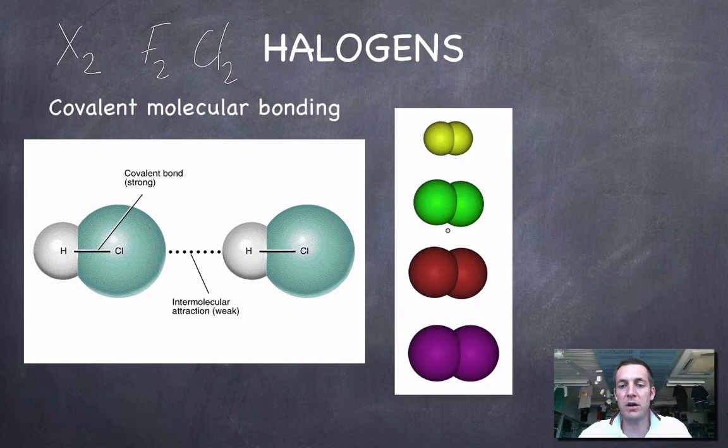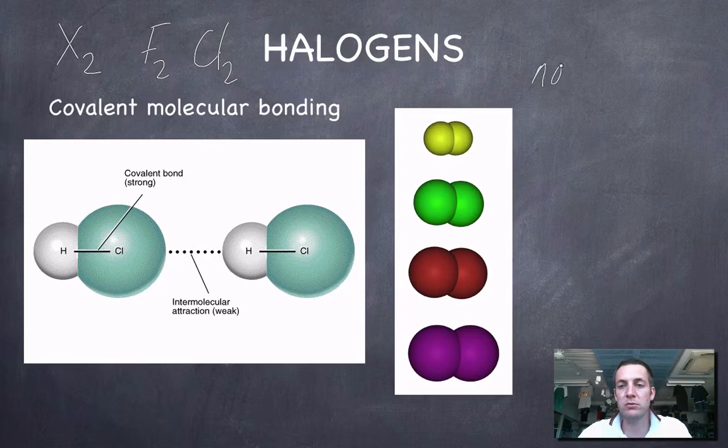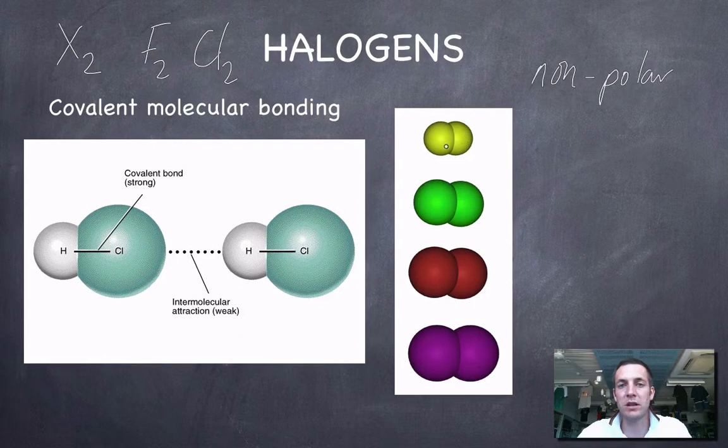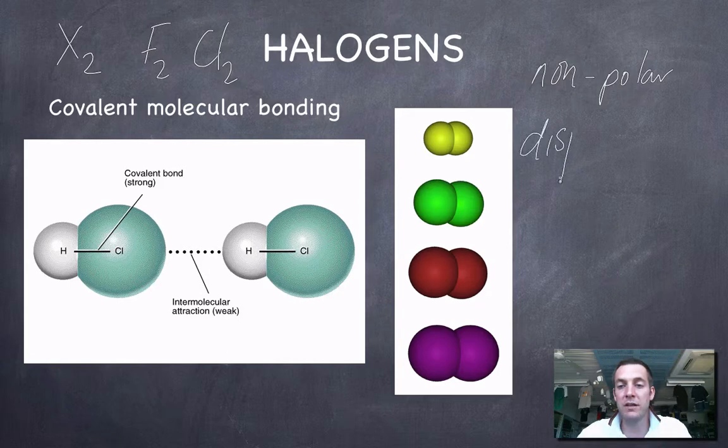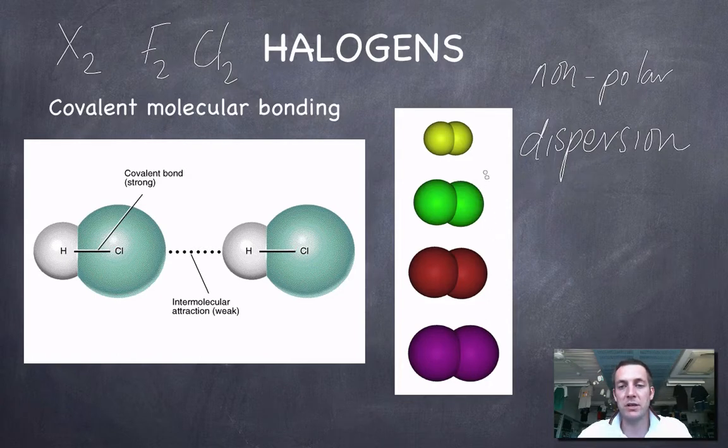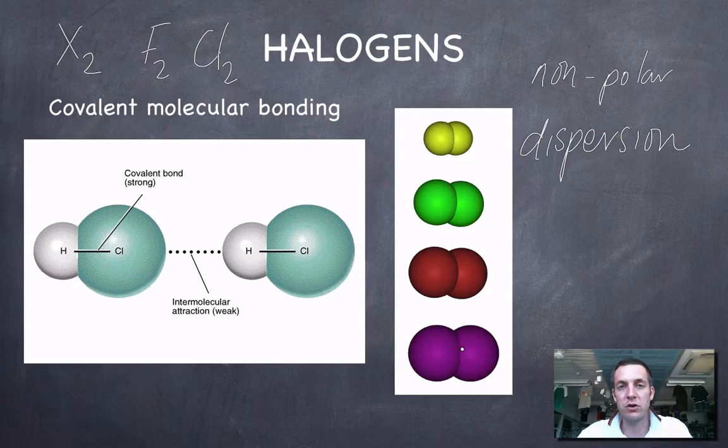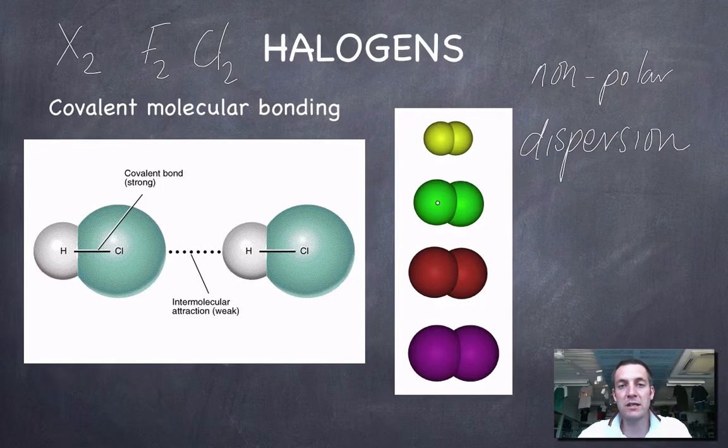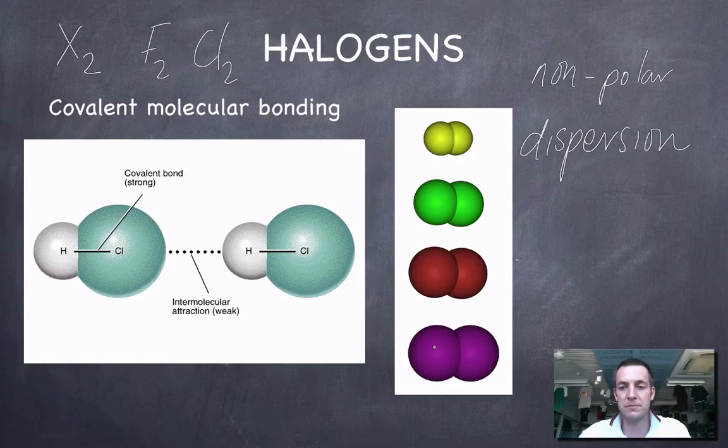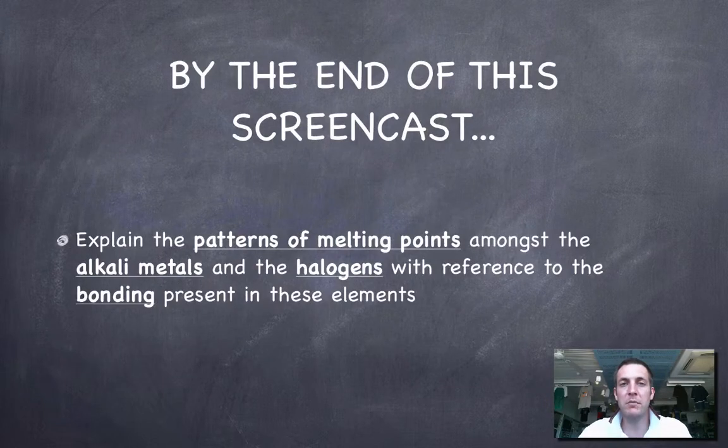Now all we need to do is decide what type of intermolecular forces we have in these molecules and how they might vary in strength as we go down this group. From the bonding topic, we ought to be able to remember that these will all be non-polar molecules. They must be, because they've got the same two atoms joined to one another, so there is no electronegativity difference between these bonded atoms. If they're non-polar, then the only forces we have here are dispersion forces. Remember that dispersion forces get stronger as the electron cloud gets bigger. Because there are more and more electrons as we move down this group, the dispersion forces will be getting stronger and stronger, and so the melting points and boiling points of these elements should be getting higher and higher. Indeed, fluorine and chlorine are gases, bromine is a liquid at room temperature, whereas iodine is a solid.